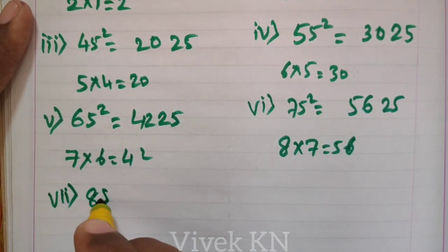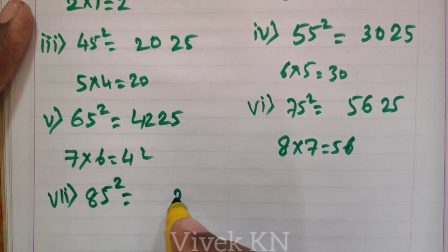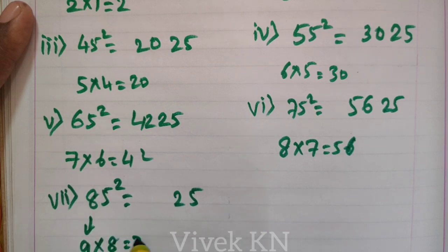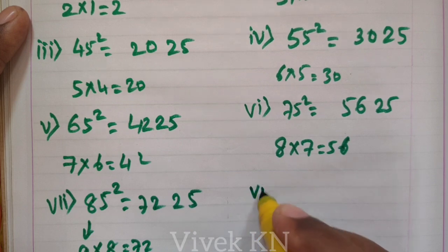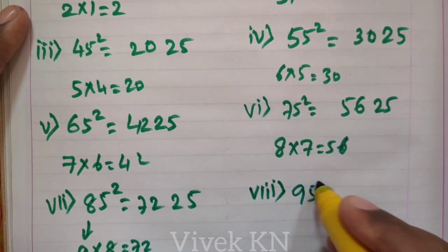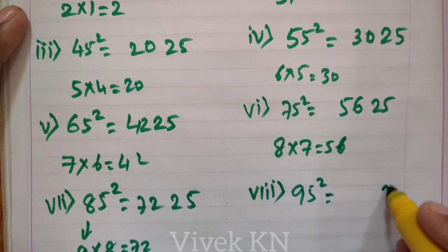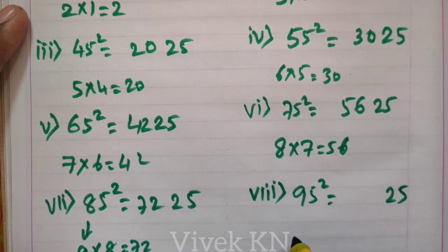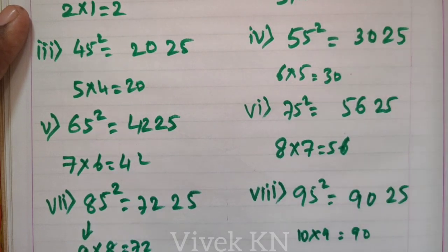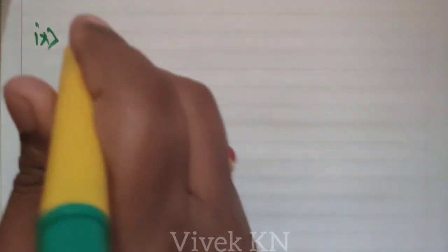Next, 85 square. 5 square is 25. The number that comes after 8 is 9. 9 into 8 equals 72. For 95 square, the number that comes after 9 is 10. 10 into 9 equals 90, so 95 square is 9025. Next, 9th problem.